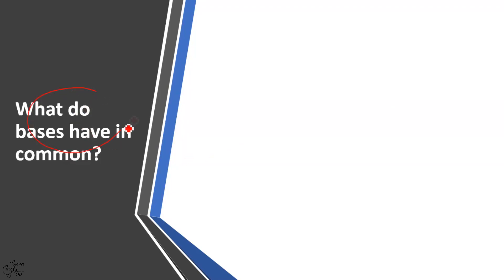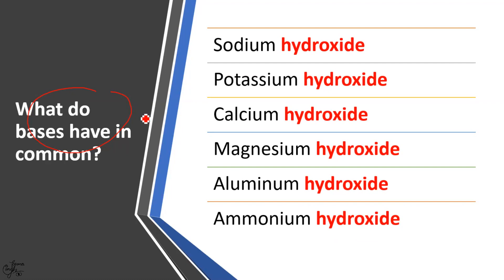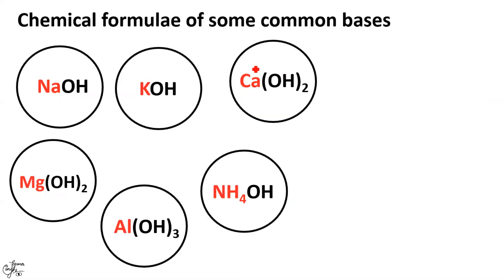Just as we did for acids, let us now find out what is common to all bases, and then define them according to Arrhenius theory. If we look at the names of some common bases, we see that the suffix 'hydroxide' is common to all of them. Thus all these substances belong to one common category known as bases. Looking at the chemical formulae, we see that the group of atoms OH is common to all of them.